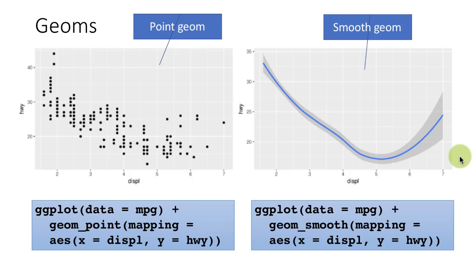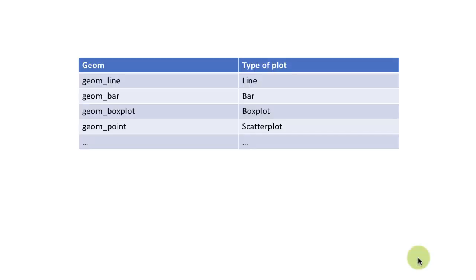So that's the point geom and this is the smooth geom — that's the only difference. Otherwise, all the mappings are exactly the same: x and y mappings are the same, the data is the same. Everything is the same except that we just used a different geom in both cases.